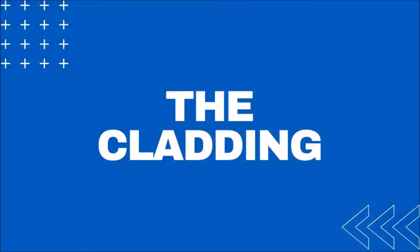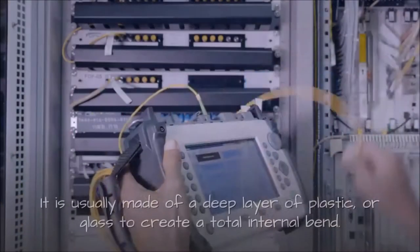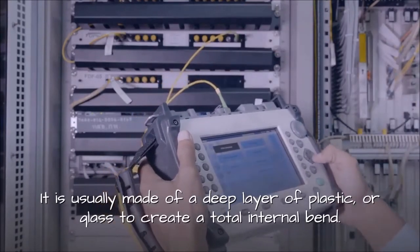Two: The cladding. Cladding is the second layer of optical fiber that wraps around the core. It is usually made of a layer of plastic or glass to create total internal reflection.